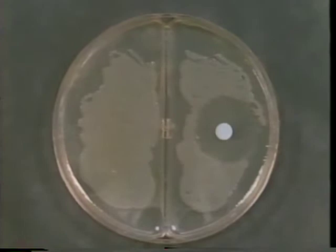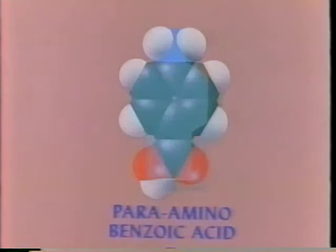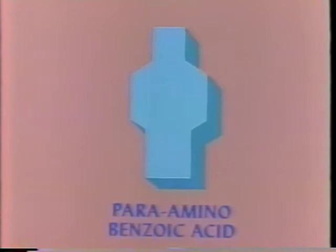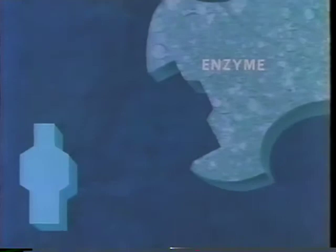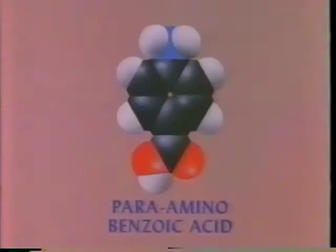How does sulfanilamide stop the growth of these harmful bacteria? First, let's examine the function of one of the key molecules that exists in the bacterial cells — it is called para-aminobenzoic acid. Using a geometric symbol retaining the general contours of the molecule, we'll follow its action within the cell. In the cell with the acid is an essential bacterial enzyme. In order for the enzyme to perform its active role, it must first combine with the para-aminobenzoic acid.